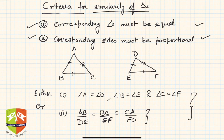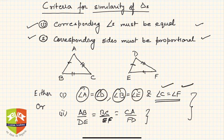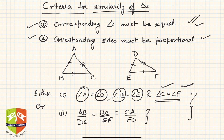Even further, by the angle sum property of triangles, you don't need to check all three angles — if two corresponding angles are equal, the third must be equal automatically. So these conditions can be reduced a little further, and we'll see all of these criteria in the following sessions. To summarize: there are two criteria for similarity of triangles, but for triangles only, establishing any one of them is sufficient. Let's begin our discussion on theorems related to similarity in the succeeding sessions.